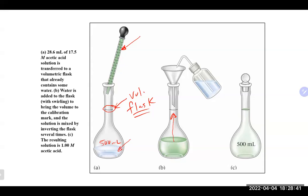When using a volumetric flask, fill it slowly — go halfway, cap it, and mix well before bringing it to the neck. Use a wash bottle or dropper to reach the meniscus exactly. If you overshoot the line and try to pour out the excess, you'll also pour out dissolved solute, because the solute is dissolved throughout. So go slow and stop exactly at the line.